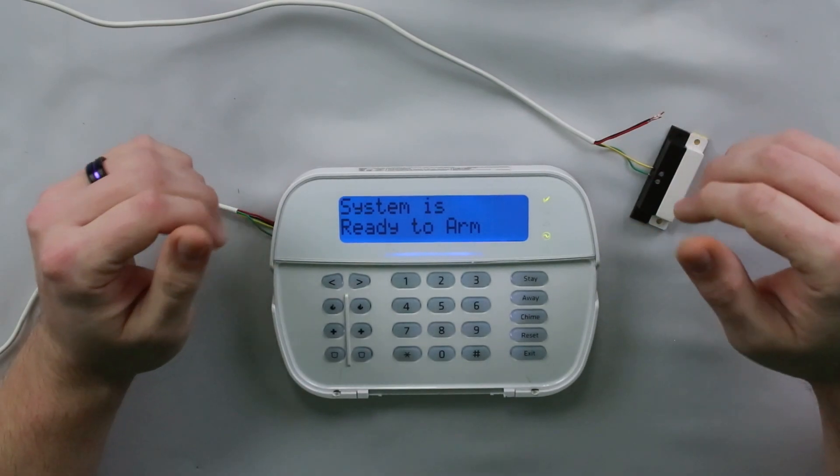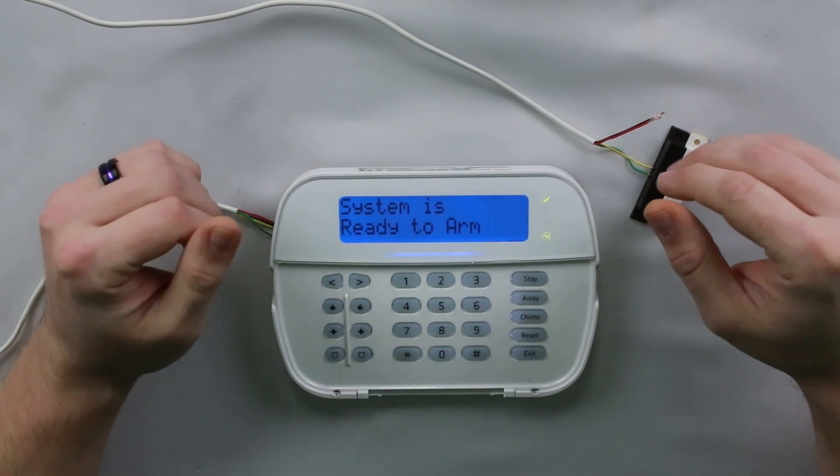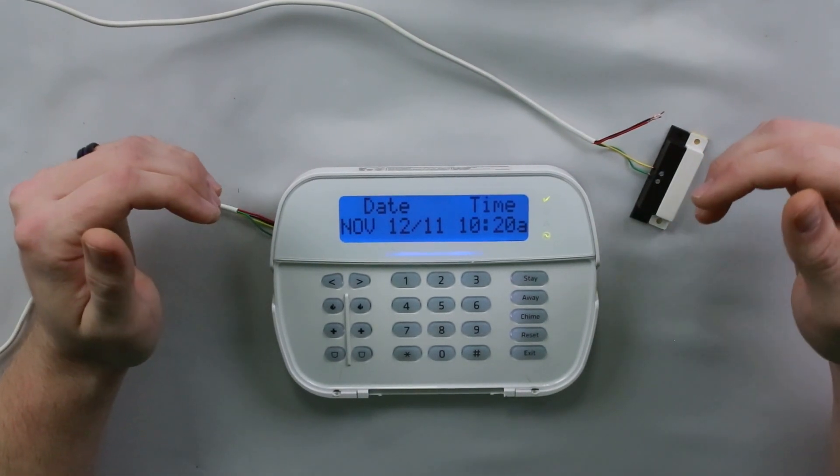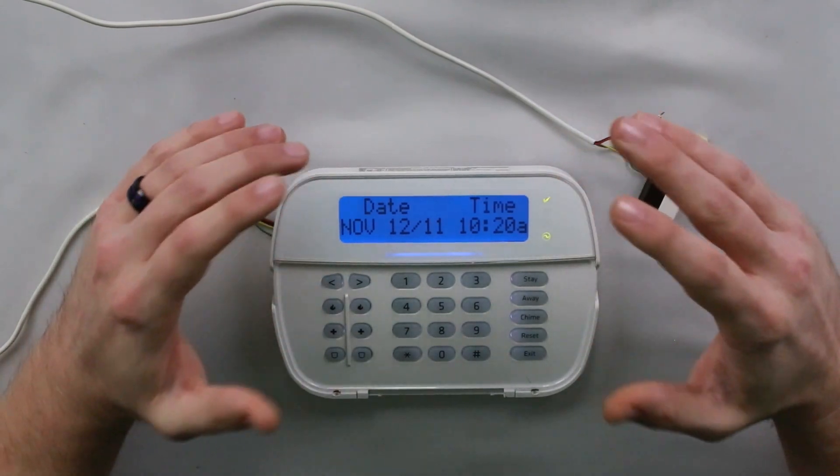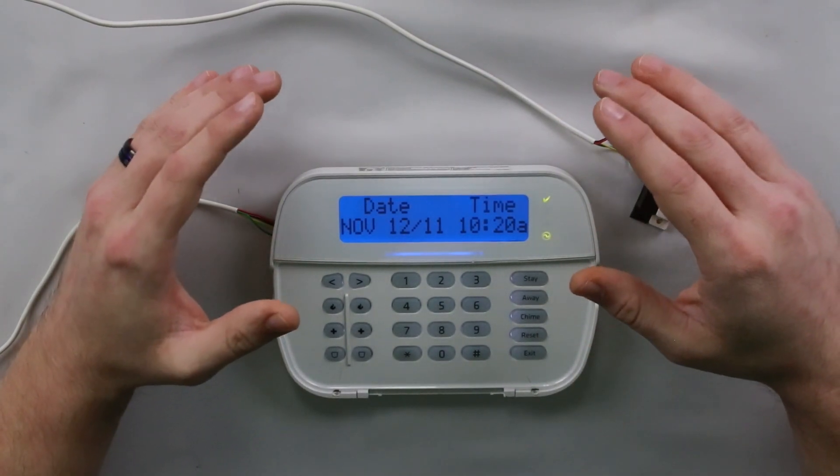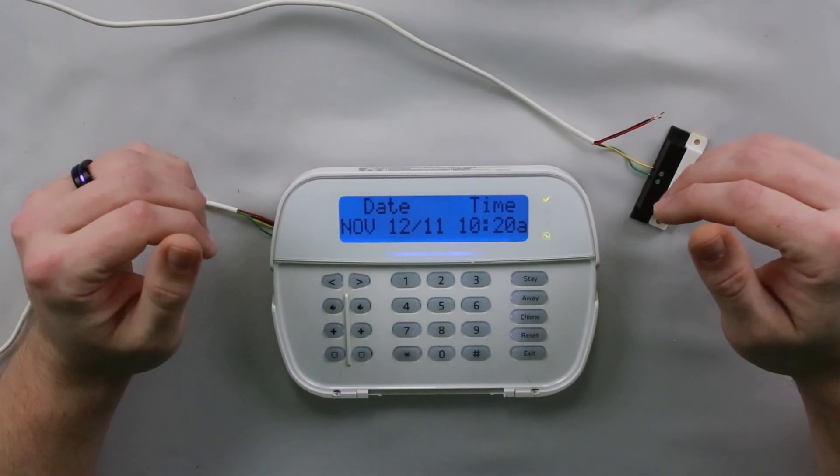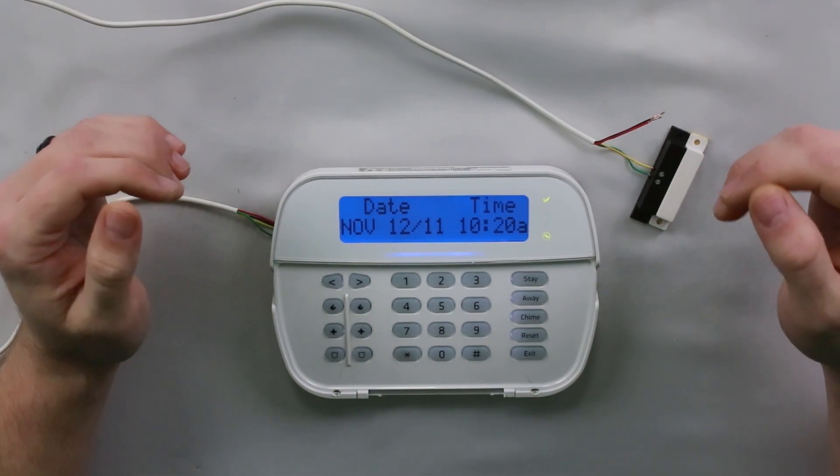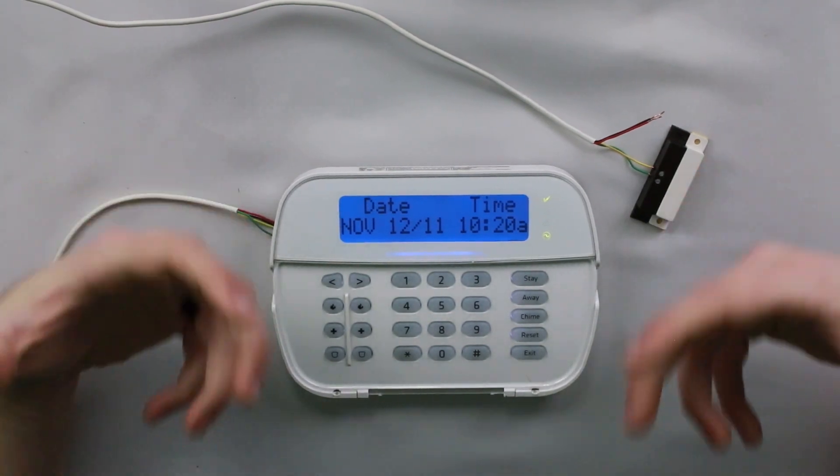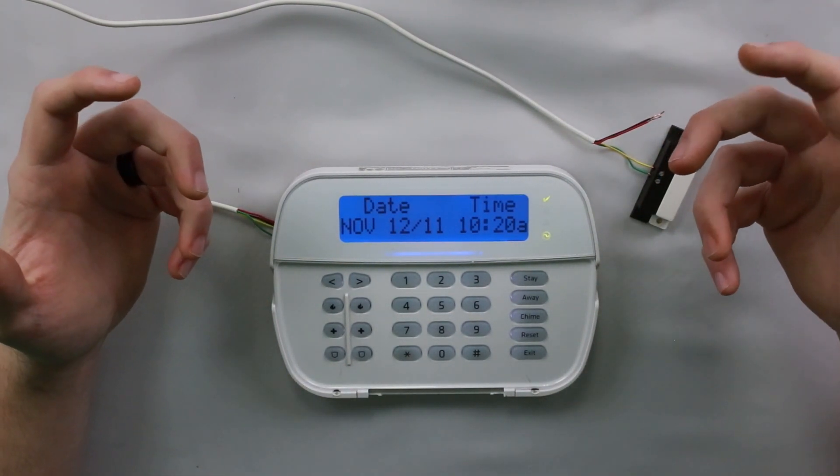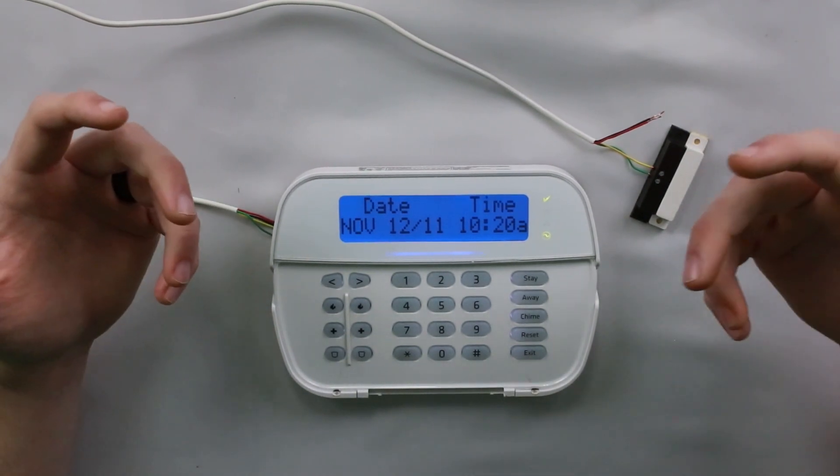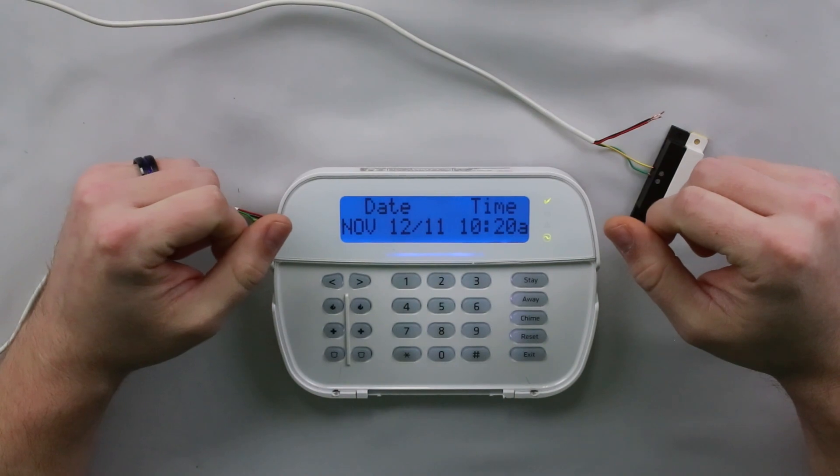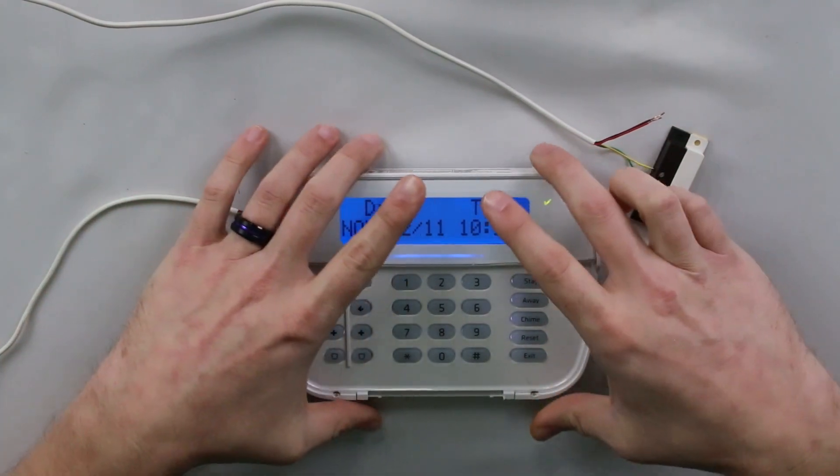The last option, option five, is zone name. If you saw it while I was programming, some keypads do have voice capability. If there is a V in the name of the part number, your keypad has voice capability. Most DSC Neo keypads do not have voice capability now. That is just because nobody ever purchased those voice keypads, so they eventually discontinued them.